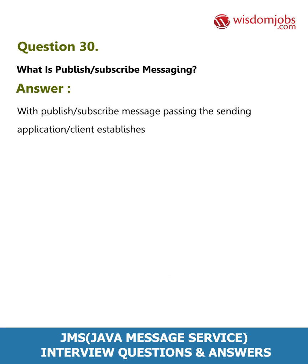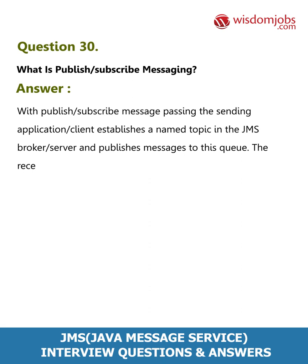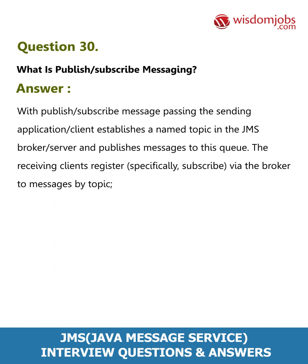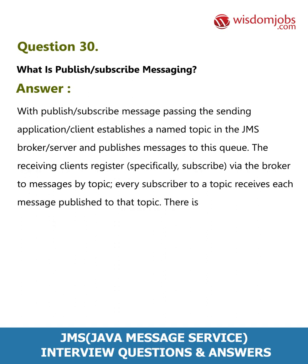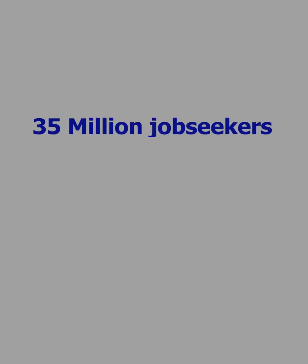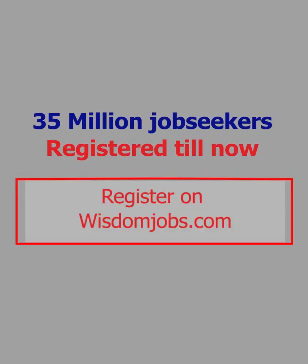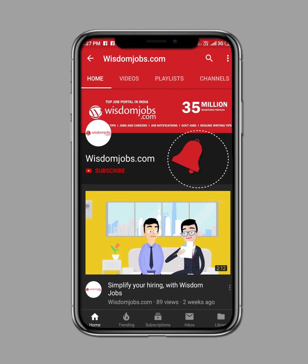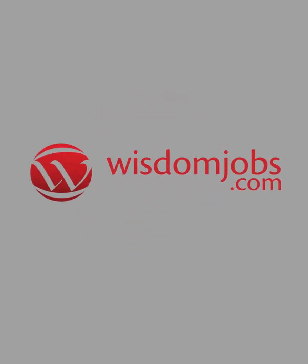Question 30: What is publish-subscribe messaging? Answer: With publish-subscribe message passing, the sending application client establishes a named topic in the JMS broker server and publishes messages to this topic. The receiving clients specifically subscribe via the broker to messages by topic. Every subscriber to a topic receives each message published to that topic. There is a one-to-many relationship between the publishing client and the subscribing clients.